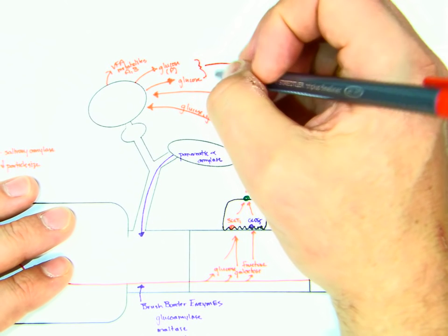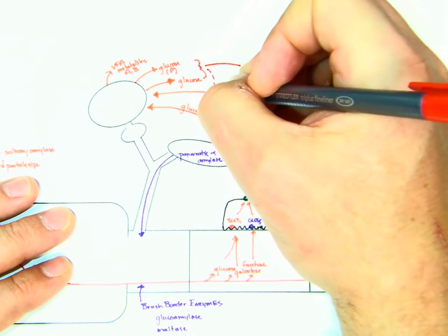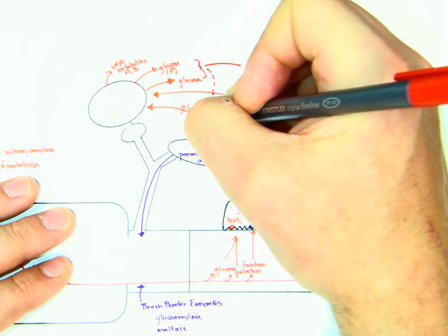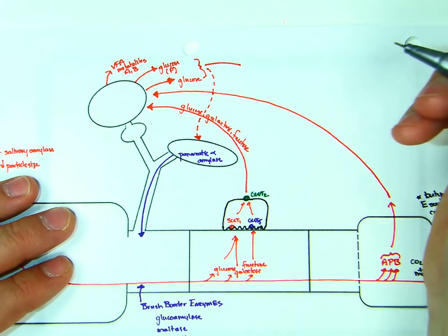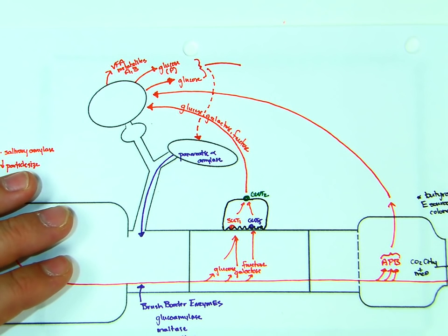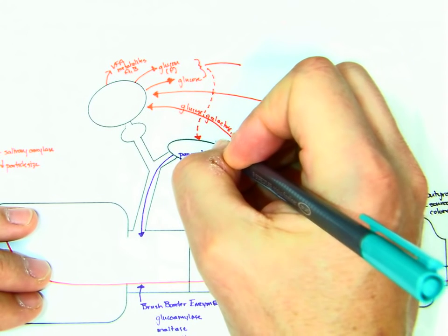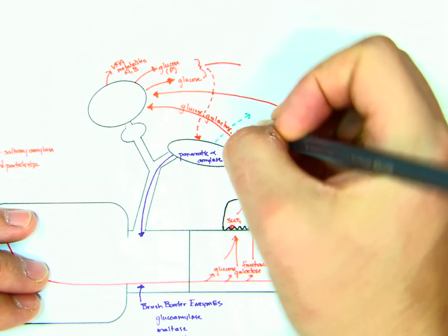Okay. And one of the things that happens is this glucose goes to, I'm dashing it just so it's easier to see, goes to the pancreas. Okay. And the pancreas is going to, as a result of this, is going to release insulin into the blood.